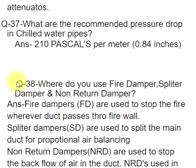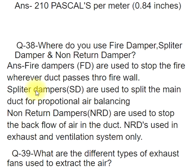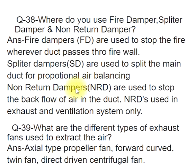Q38: Where do you use fire damper, splitter damper, and non-return damper? ANS: Fire dampers (FD) are used to stop fire wherever a duct passes through a fire wall. Splitter dampers (SD) are used to split the main duct for proportional air balancing. Non-return dampers (NRD) are used to stop the backflow of air in the duct; NRDs are used in exhaust and ventilation systems only.